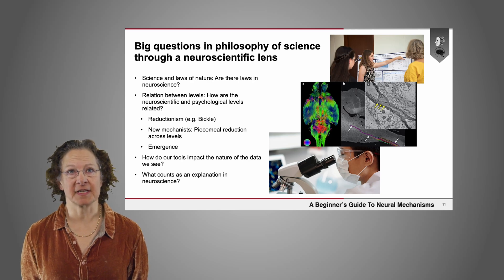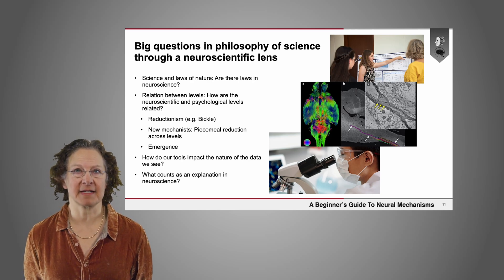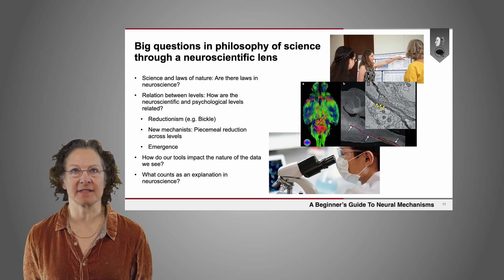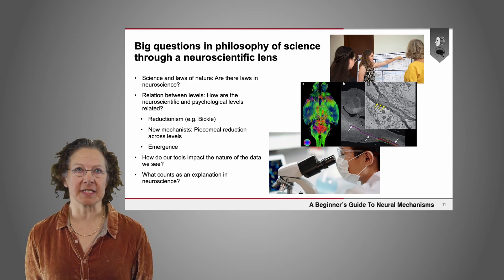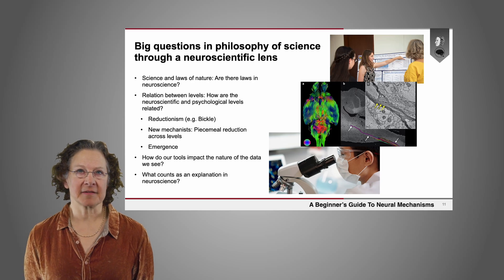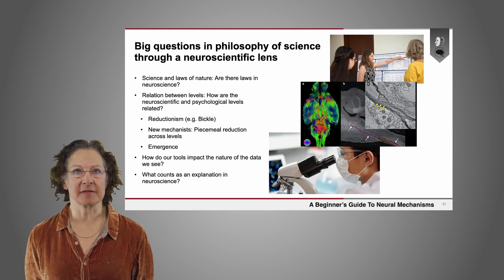Traditionally, philosophy of science has been modeled on physics — that's sort of the model science that philosophy of science has considered. But physics and biology are very different, and so the standard questions in philosophy of science, when viewed through a neuroscientific lens, might look quite different.